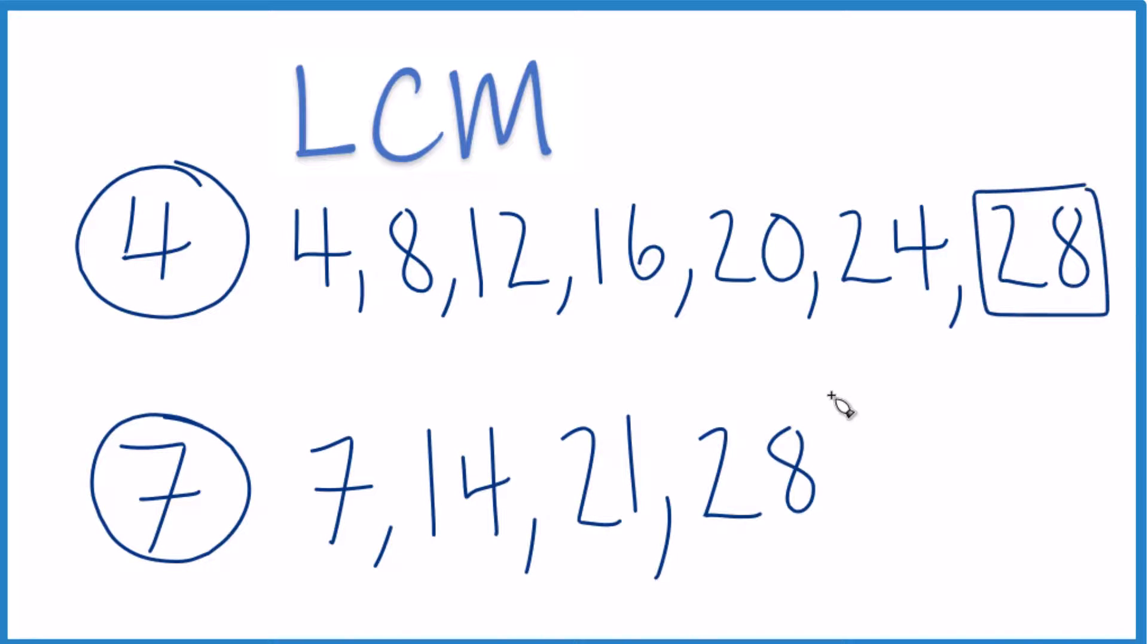And there it is. So this is the first number we found that's in common between 4 and 7. And it's the smallest one because it's first, the least common multiple.